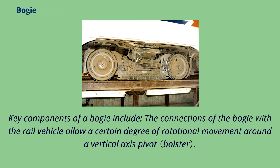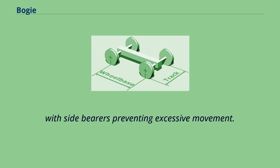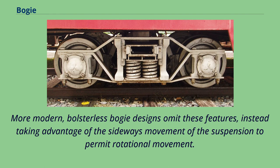Key components of a bogey include connections that allow a certain degree of rotational movement around a vertical axis pivot, with side bearers preventing excessive movement. More modern bolsterless bogey designs omit these features, instead taking advantage of the sideways movement of the suspension to permit rotational movement.